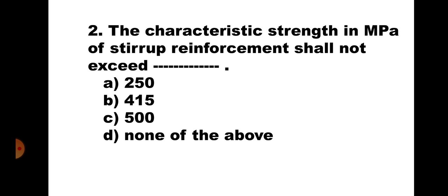Question 2. The characteristic strength in MPa of stirrup reinforcement shall not exceed: A. 250, B. 415, C. 500, and D. None of the above. When we are using the reinforcement bar for stirrups, the grade of that is limited to 415 as per IS-456. Hence, the correct answer is B. 415 N per mm square.